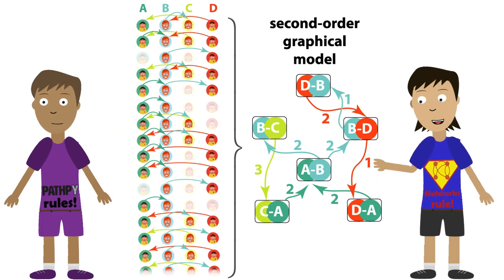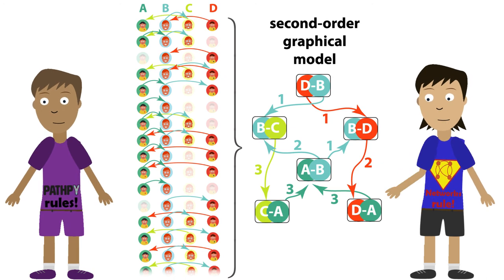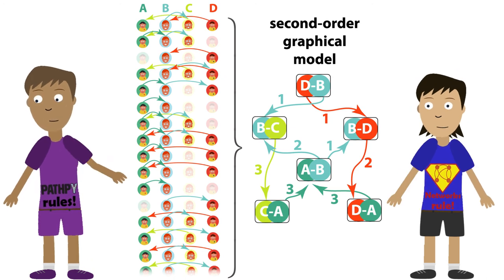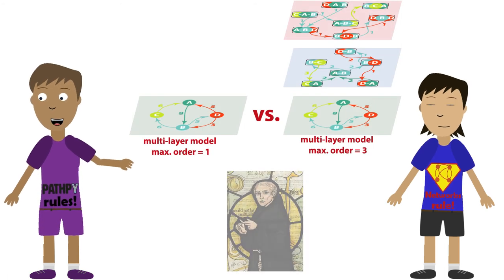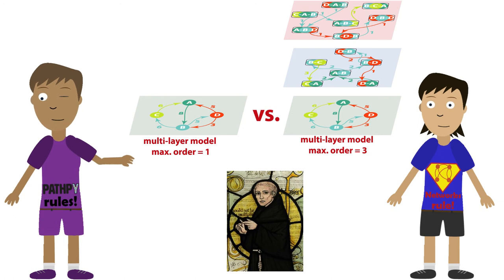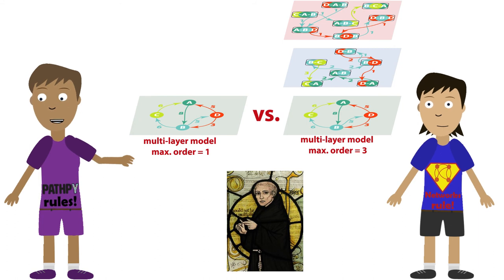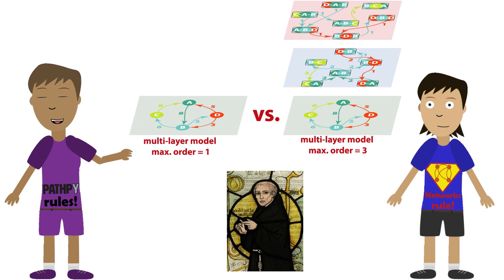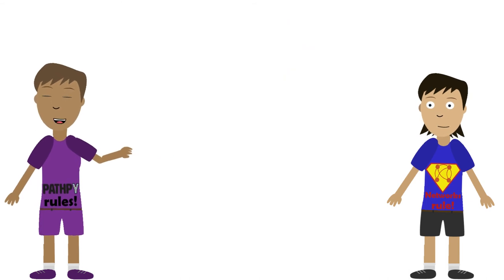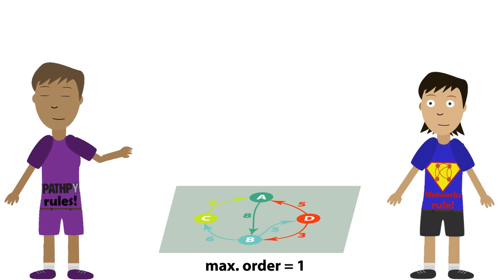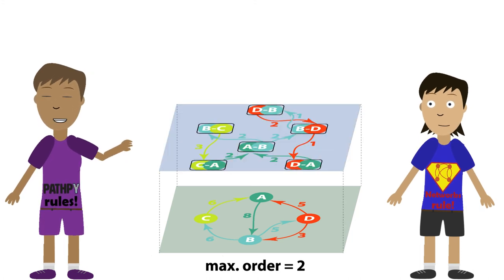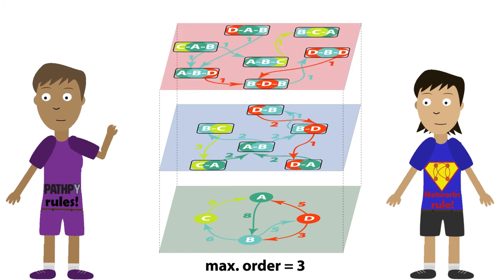Wait a minute — that's trivial. A more complex model clearly explains the data better. You're right. That's why we need model selection and a bit of philosophy. The idea goes back to William of Ockham, who argued that we should favor models that make the fewest assumptions. This is called Ockham's razor, and we can incorporate it by using statistical tests that account for the complexity of our model. This helps us to decide how many layers of higher-order graphical models we need to explain our data. If a first-order model is enough, then network analysis is justified. The need for higher-order model layers signifies temporal correlations that question standard network analysis.